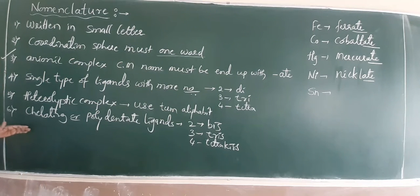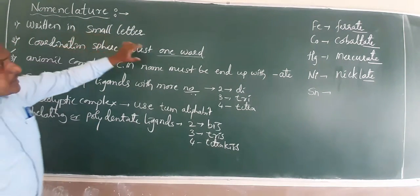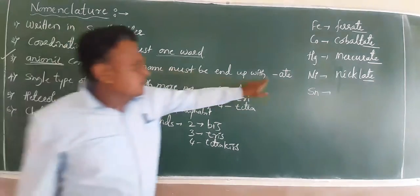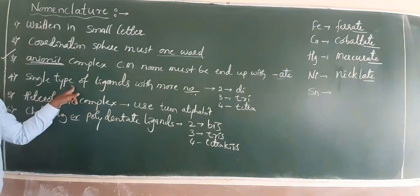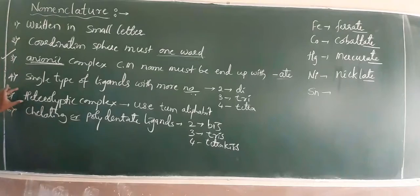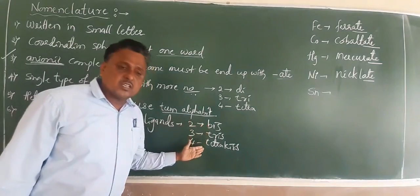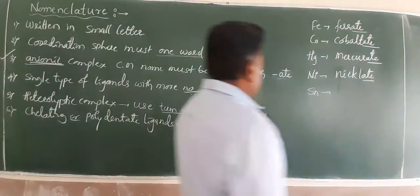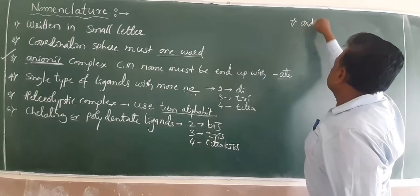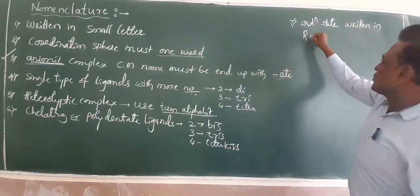This completes the sixth rule of coordination complexes. To summarize: nomenclature is written in small letters; the coordination sphere is one word; for anionic complexes the central metal ends in -ate; single-type ligands use di/tri/tetra prefixes; heteroleptic complexes use alphabetical order; chelating ligands use bis/tris/tetrakis.